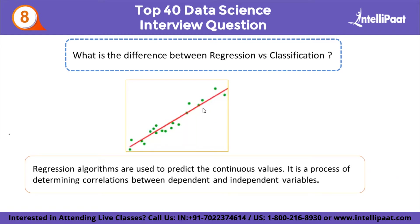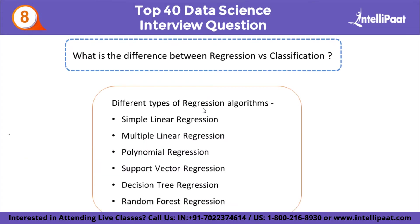What is the difference between regression and classification? Regression algorithms are used to predict continuous values. Regression determines correlations between dependent and independent variables — for example, price or salary. Taking experience versus salary: as experience increases, salary also increases. Types of regression include simple linear regression, multiple linear regression, polynomial regression, support vector regression, decision tree, and random forest.